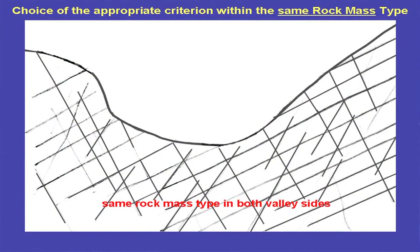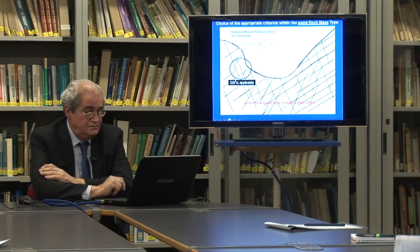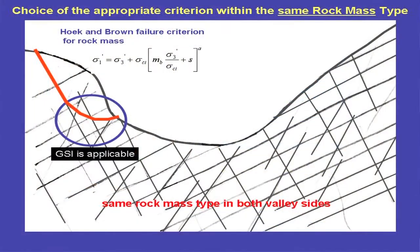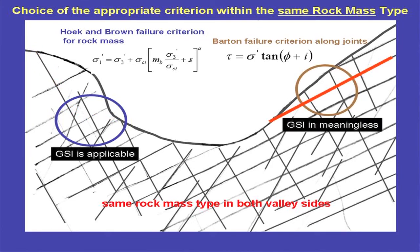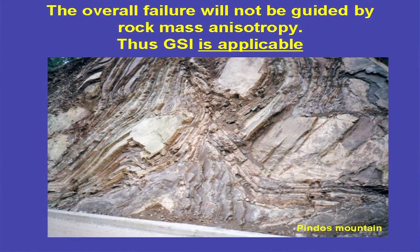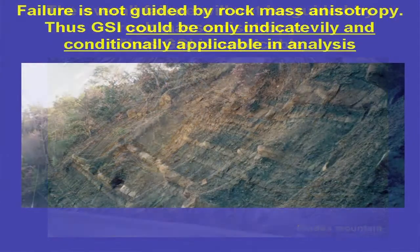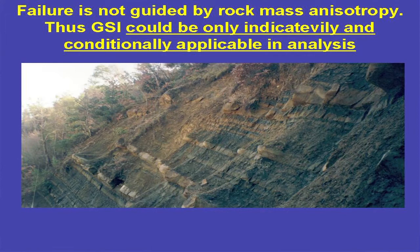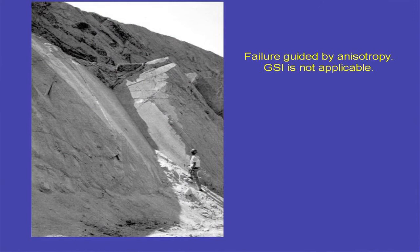GSI applies in isotropic media, and where failure does not follow a preferential direction. An example: this is the same rock mass type in both valley sides, same GSI, and here GSI is applicable — the Hoek-Brown failure criteria can be used because failure will go through the rock mass involving different joint families and the intact rock. On the other side, although the same GSI, it is meaningless because failure along joints governs and the Barton criterion for joints should be applied. Here is applicable; here is not. The instability is structurally dependent — the wedge.